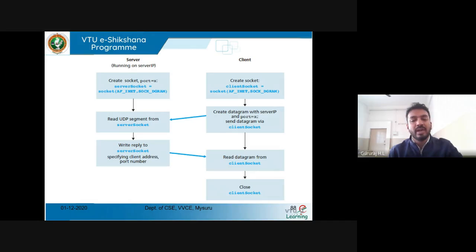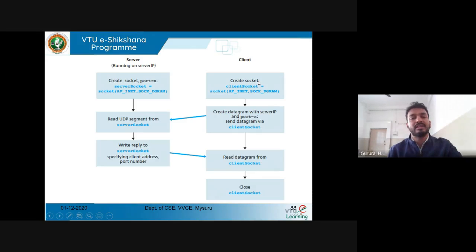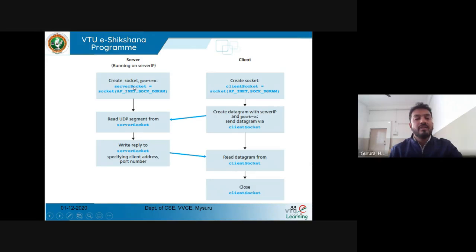This is exactly how the main communication between TCP or UDP happens between client and server. The client will always initiate the communication, but before that the server should always be ready. With the help of the socket method, the client will send a request. Using a server socket, it will connect with the client.